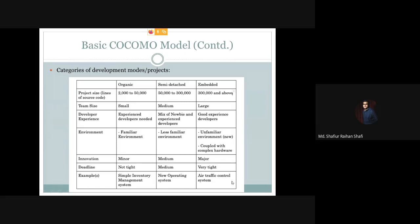For this type of project, which is large and tightly scheduled, an example is an air traffic control system — a very complex system involving many different types of hardware. These are the three categories of projects or development modes according to Boehm regarding the basic COCOMO model: organic, semi-detached, and embedded, along with their characteristics and corresponding values.